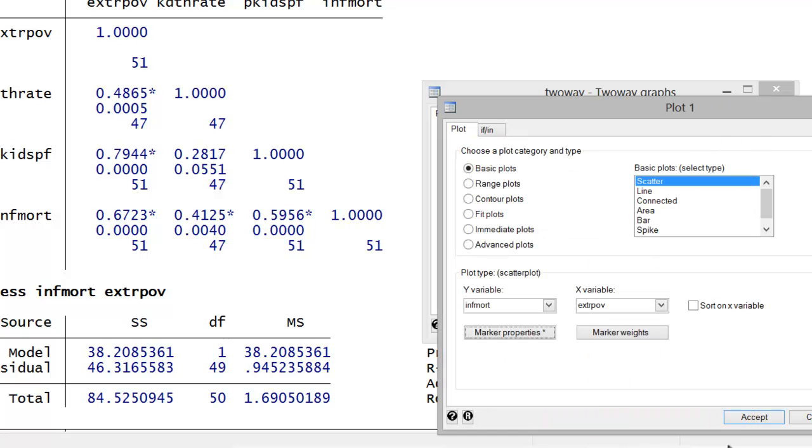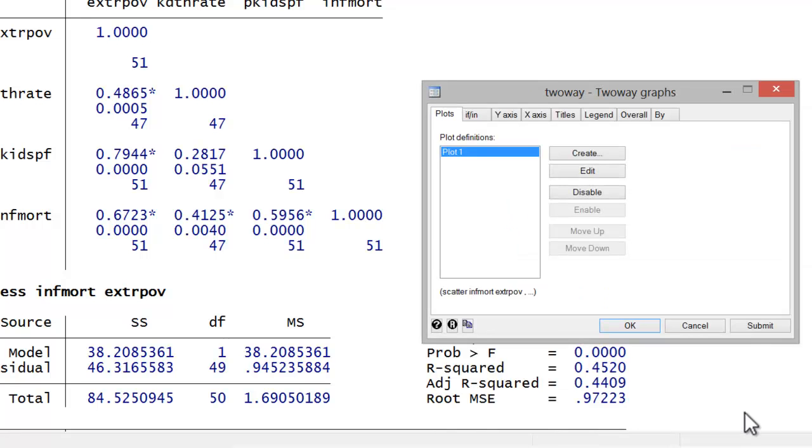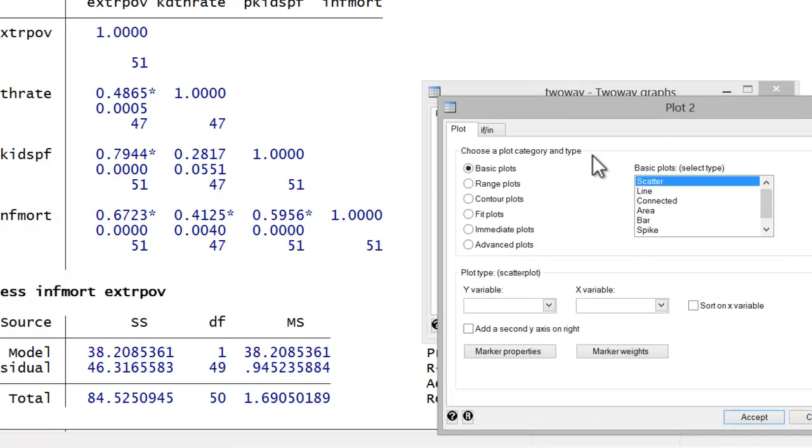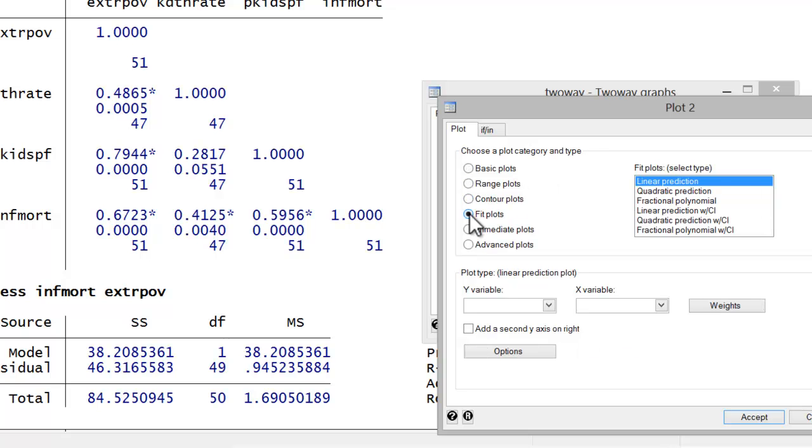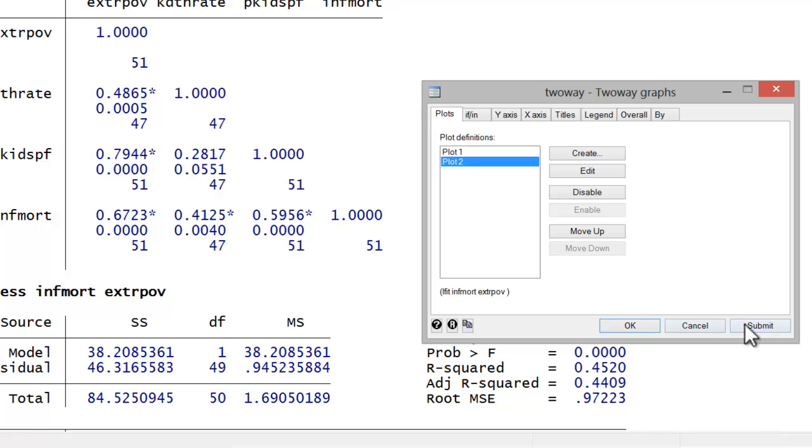Let's go ahead and hit Accept and Accept. Now, to create the two-way graph for the fitted line, we'll go back to Create. In this case, we'll do Fit Plots and Linear Prediction. And what this is going to do is fit the best line through our plotted points using the principle of ordinary least squares. So again, in the Y variable, we'll insert our dependent variable, infant mortality. And in the X variable, we'll insert our independent causal variable, extreme poverty. Let's go ahead and hit Accept. And let's go ahead and hit Submit.